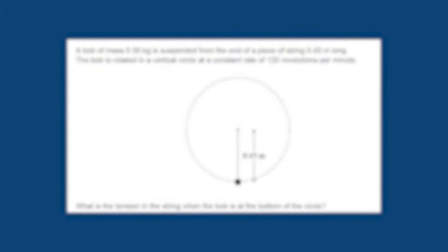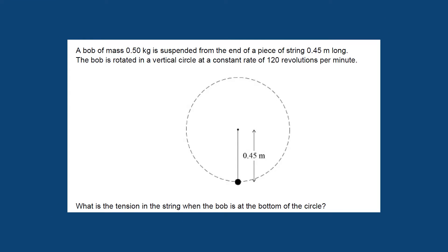In this question we have a piece of string which is 0.45 meters long rotating in a vertical circle with a mass of 0.5 kilograms doing 120 revs a minute, and we want to find the tension in the string.